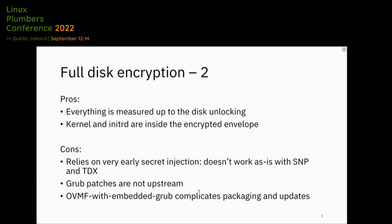The idea here is to measure everything until the unlocking: OVMF and GRUB are measured, and therefore if the measurement is wrong the guest owner won't inject the secret and we're not allowed the encryption. The kernel and initrd are inside the encrypted envelope, so if there's something secret there they're encrypted as well. It relies on early secret injection, which is more problematic to do in SNP and TDX where currently the way to get the attestation report is later in user space.